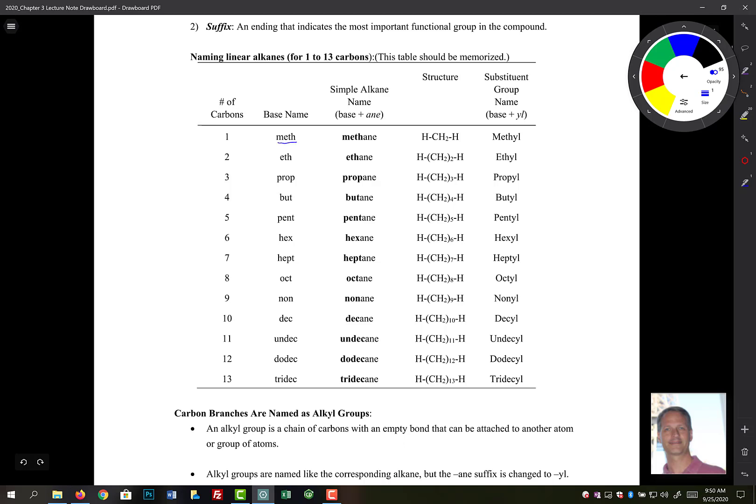So if we have one carbon, the base name of that is meth. And if it's an alkane, we would call it a methane molecule. And it has the formula here. It's kind of a weird way of writing it, but it is the same as a CH4. And don't worry about this last column for right now.